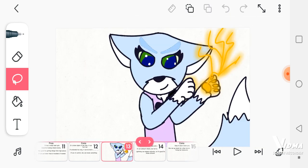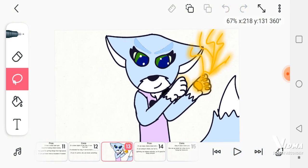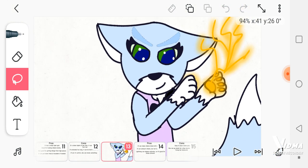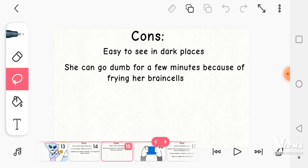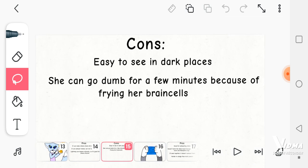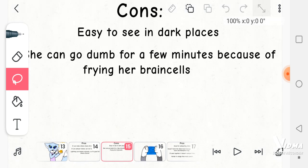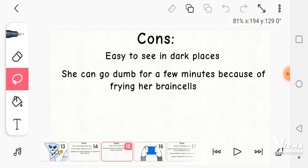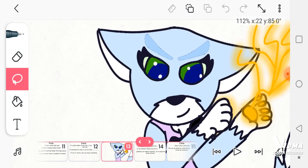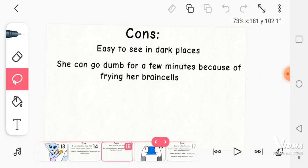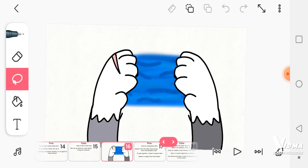That's gonna get confusing if I think that her name's Ice but she can't control ice. I just thought that would be way too simple. Anyway, time for the cons. The first con, easy to see in dark places. The second con, she can go dumb for a few minutes because she fries her brain cells. Also, only MHA fans will get this next joke. Denki Kaminari has entered the chat. I know, it's terrible.